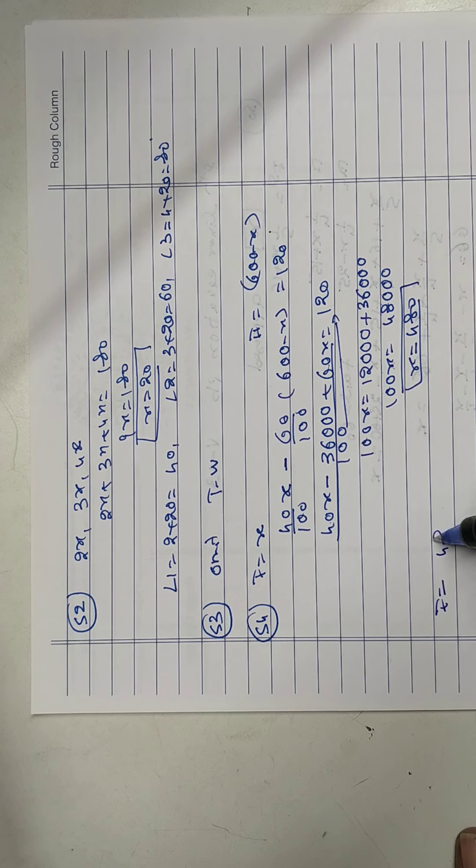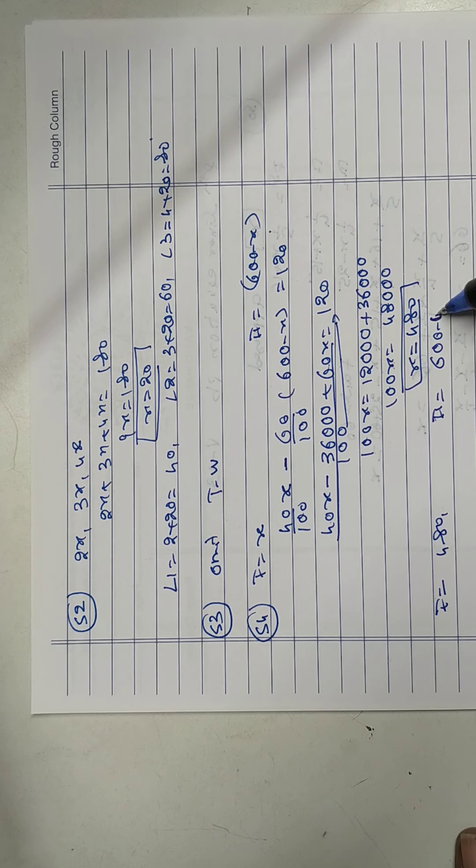So part 1, 480. And part 2, 600 minus 480 is 120.